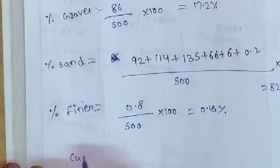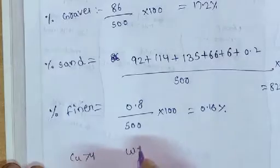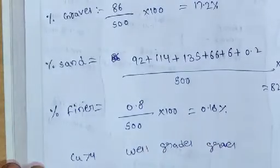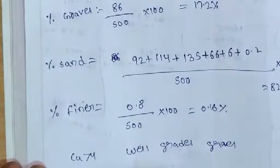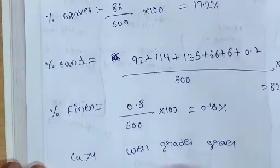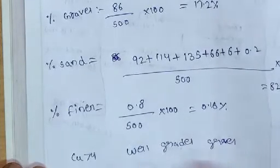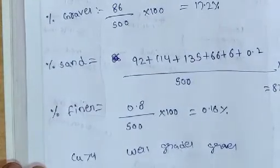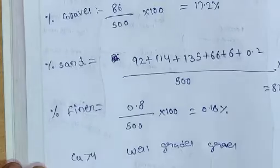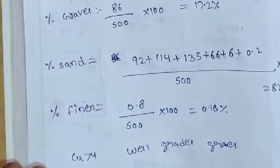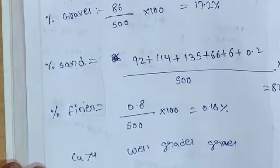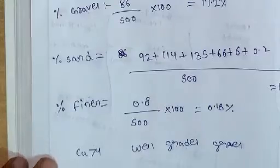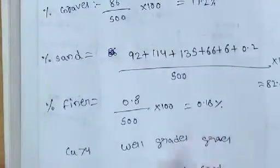Whenever Cu (coefficient of uniformity) is greater than 4, it is called well-graded gravel. Whenever Cu is greater than 6, it is called well-graded sand. Whenever Cc (coefficient of curvature) lies between 1 and 3, it is called well-graded soil. These criteria for well-graded gravel, well-graded sand, and well-graded soil will be useful whenever you face exam questions.